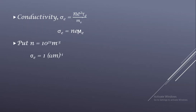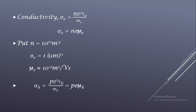If we put a carrier concentration of 10²¹ per meter cube, which is a standard value for a semiconductor, then sigma_e comes to around 1 per ohm per meter, which we have derived already. Putting those values into the equation, we find that mu_e (electron mobility) comes to approximately 10⁻² meter squared per volt-second. This is a typical value.